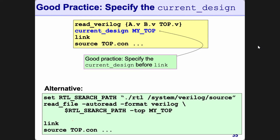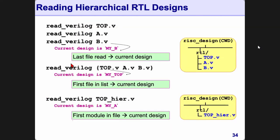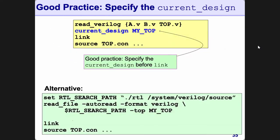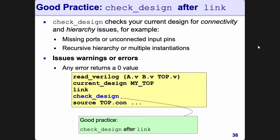However, be careful — because of versioning, DC will always read in the first file it can find. So if you want specific versions read in, you may want to use any of the previous formats.